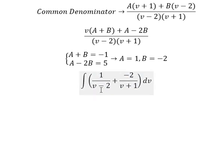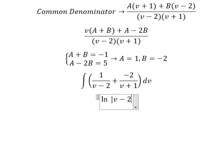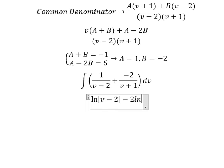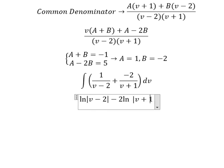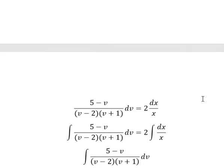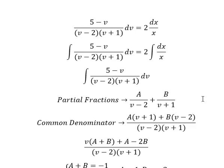Integrating: with A equals 1 we get ln of the absolute value of (v minus 2), and with B equals negative 2 we get negative 2 ln of the absolute value of (v plus 1), plus constant c. Now we go back and substitute.